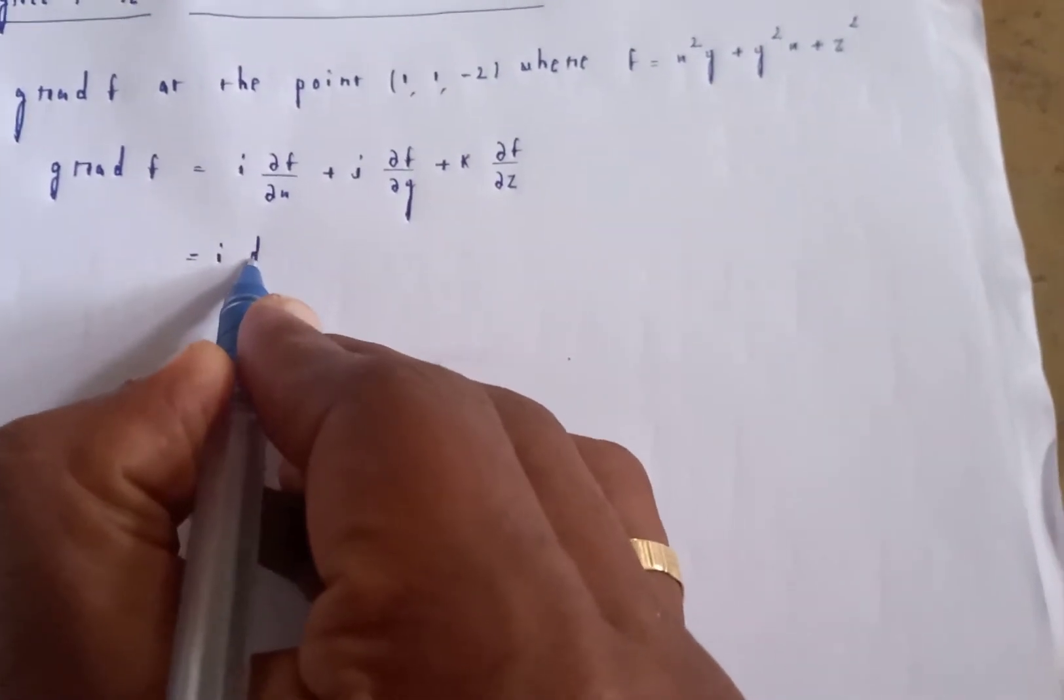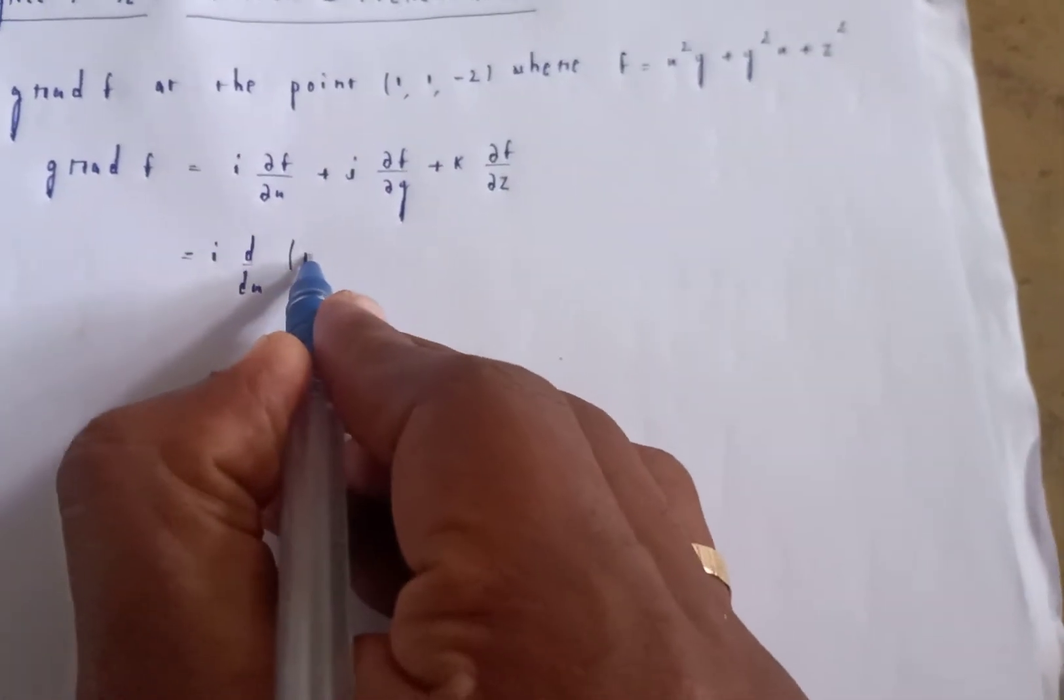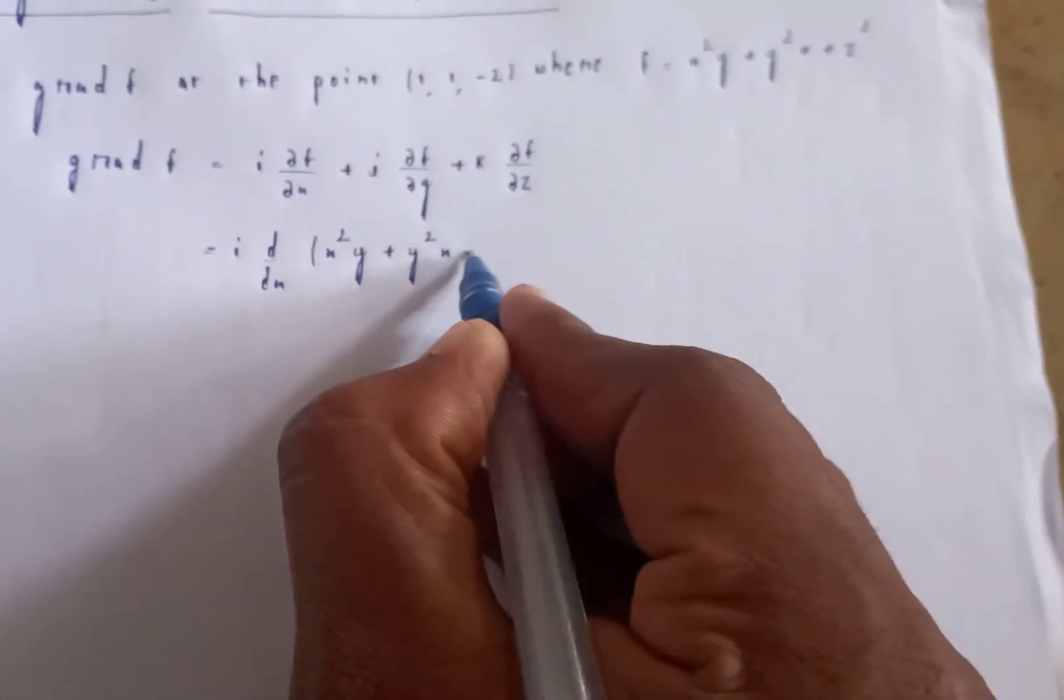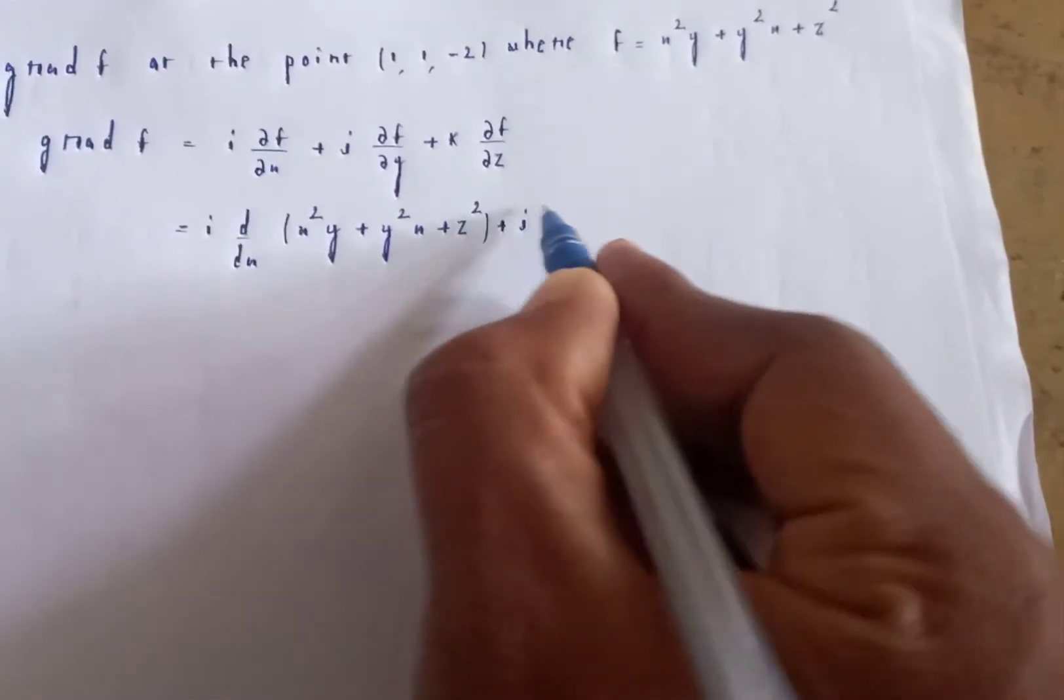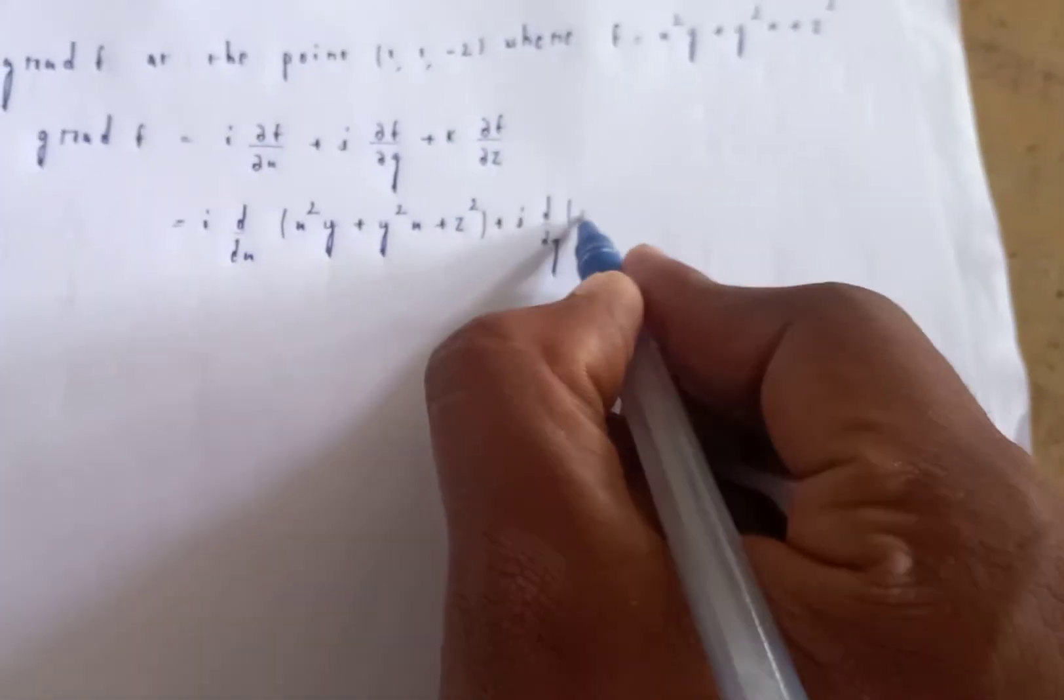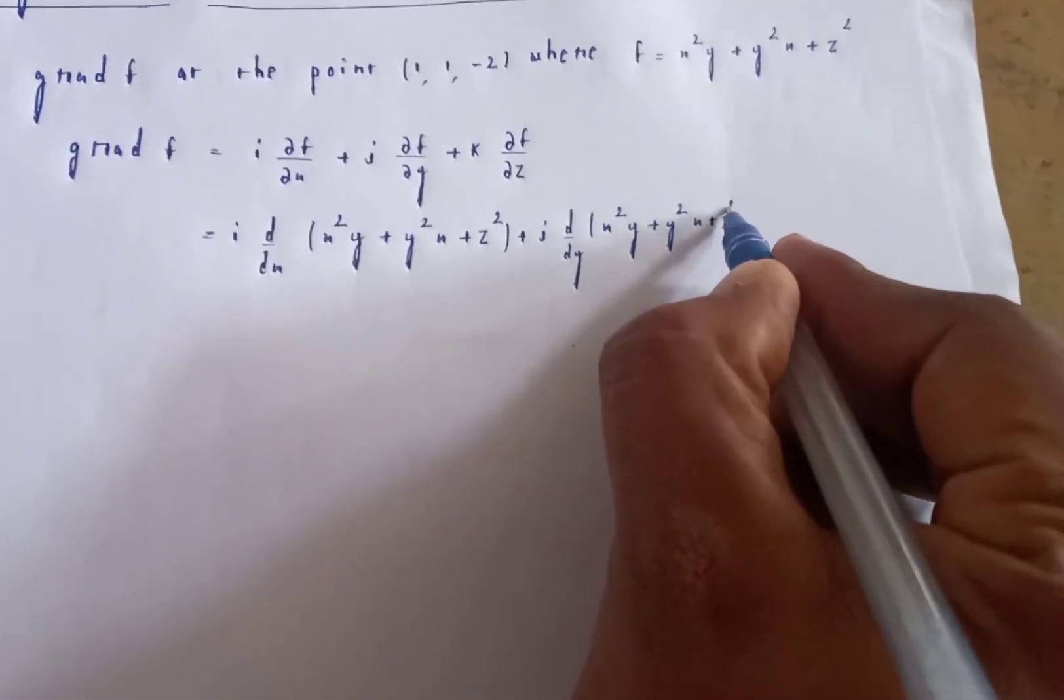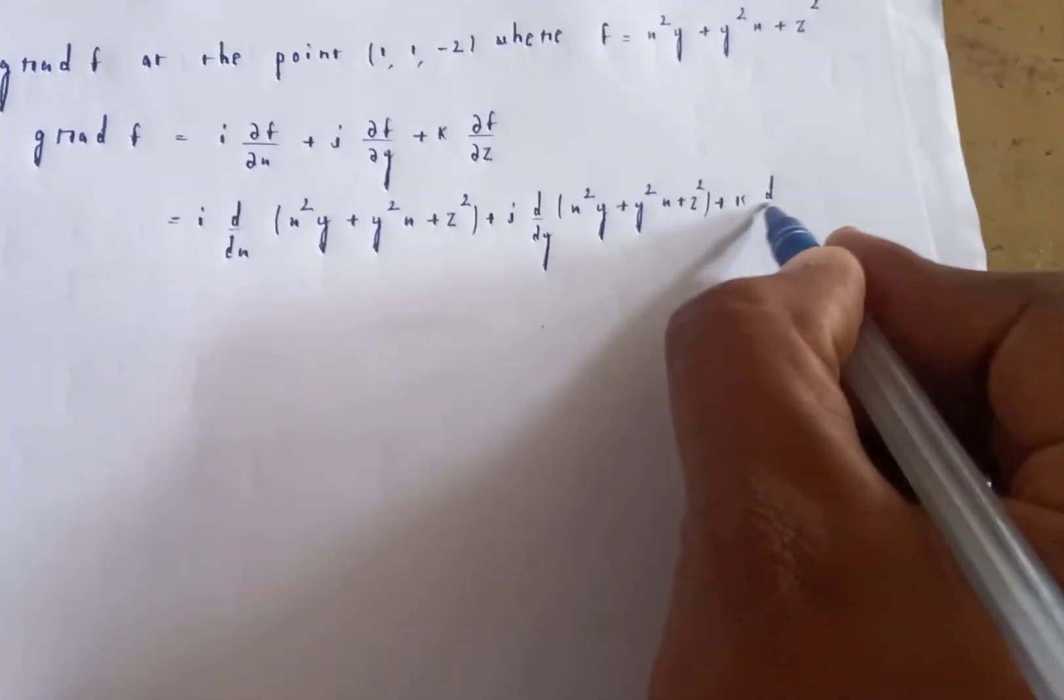That's i times d/dx of (x²y + y²x + z²) plus j times d/dy of (x²y + y²x + z²) plus k times d/dz of (x²y + y²x + z²).